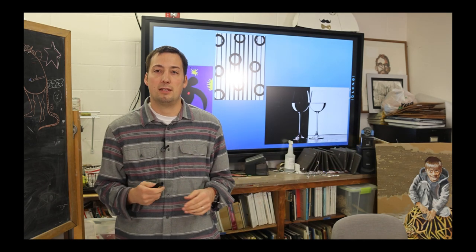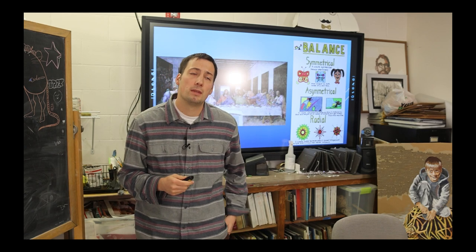Do you send the viewer's eye off of your image with the big line that's shooting off somewhere? Or can you keep them balanced and inside the image looking at it for longer periods of time?